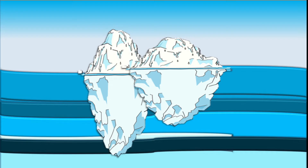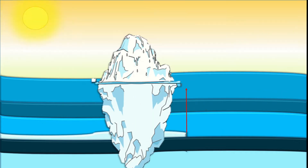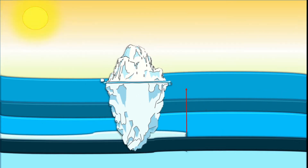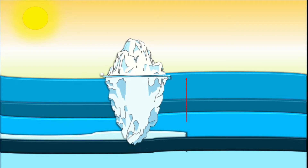The iceberg will reach a floating position when its 10% volume is above the water level. Now, if some of the ice melts, the mass of the iceberg will decrease, and the iceberg will rise to maintain the floating position.